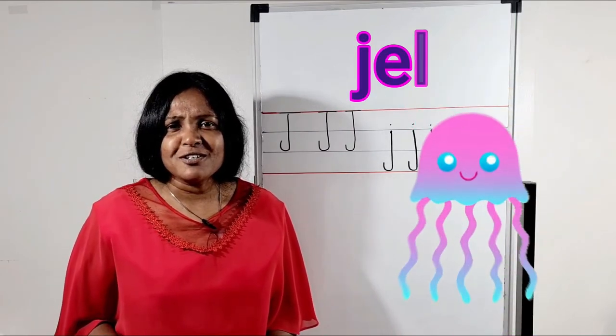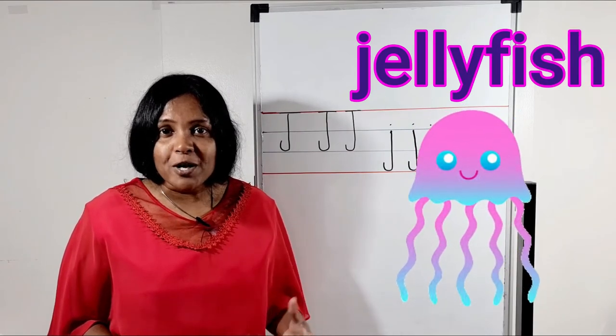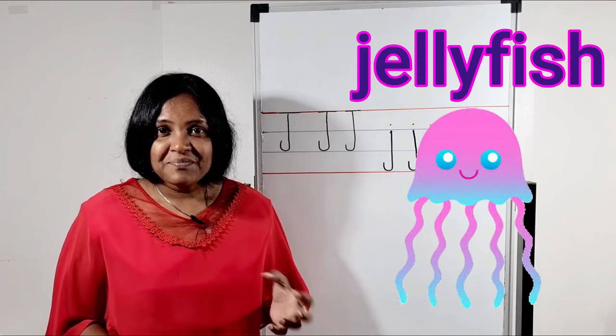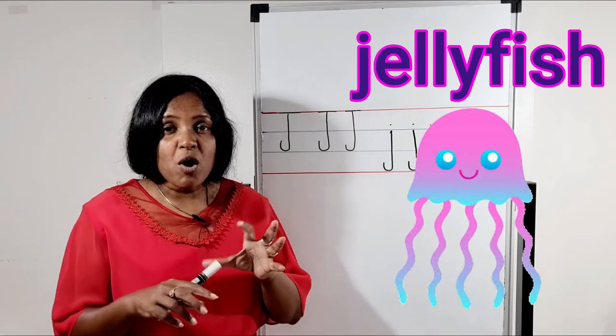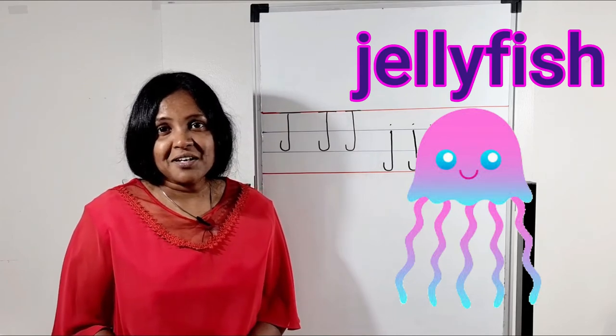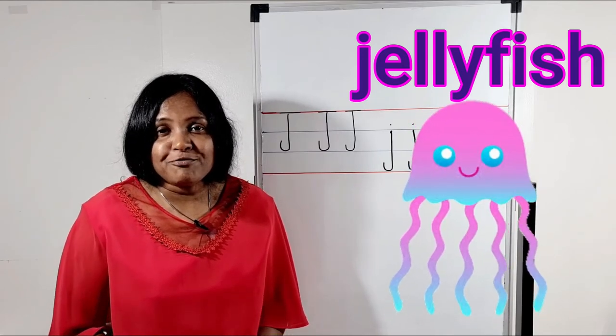Number 4. Jellyfish. Jellyfish is a sea creature. It has a transparent body. It is bell shape or soccer shape. Some jellyfishers are venomous. So we have to be careful.